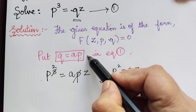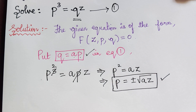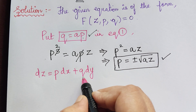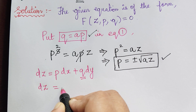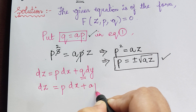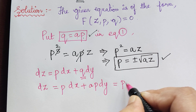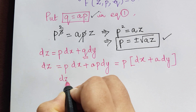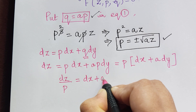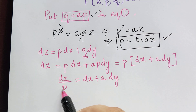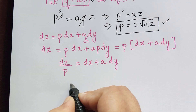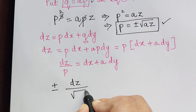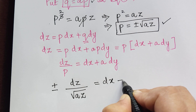Now we substitute the values of p and q into the equation dz = p dx + q dy. Before substituting, we replace q by ap, so dz = p dx + ap dy, which equals p(dx + a dy). Taking p to the left gives dz/p = dx + a dy. Substituting p = ±√(az), we get dz / (±√(az)) = dx + a dy.